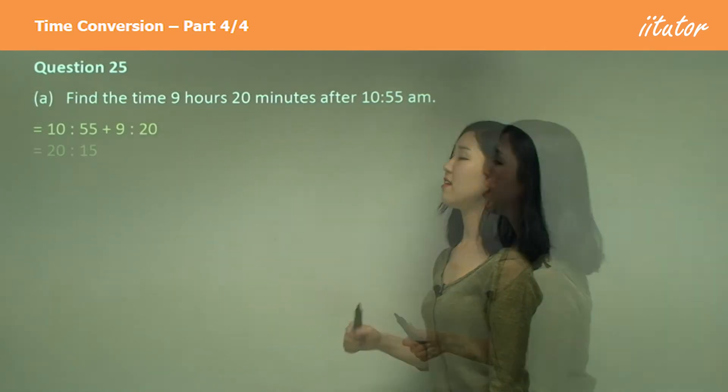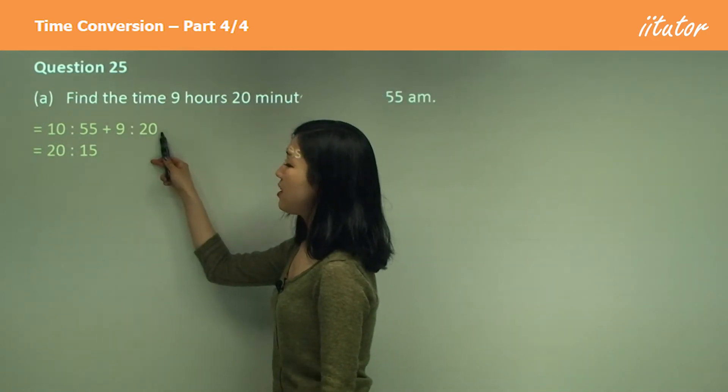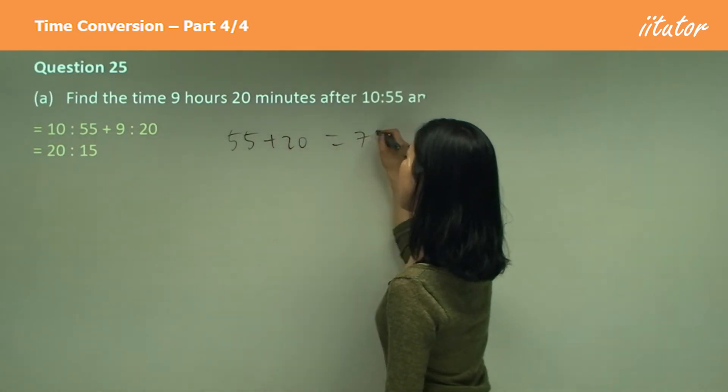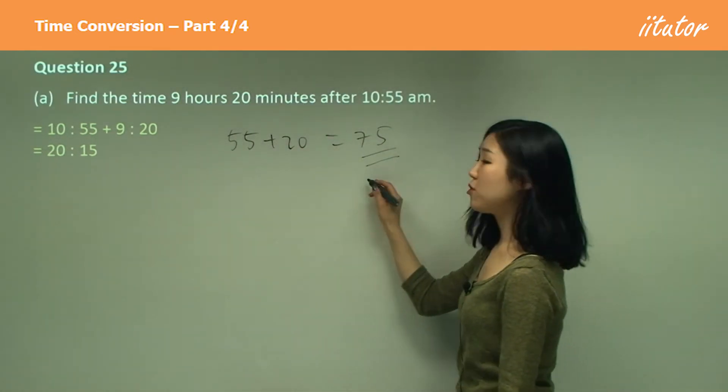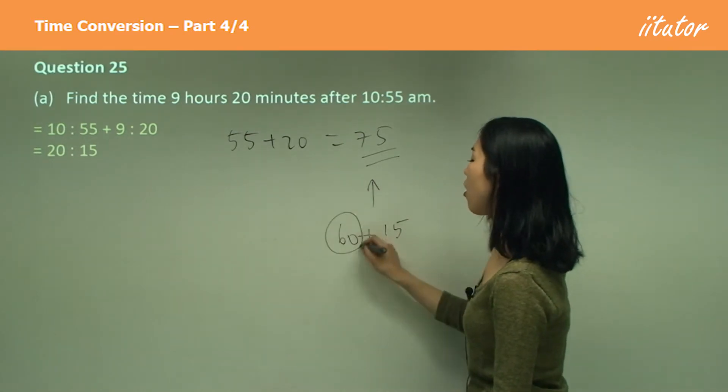So we do that plus that. It should be something like this. 55 plus 20, okay? 55 plus 20, that is 75, isn't it? Which is 60 plus 15. So we've got a whole hour.